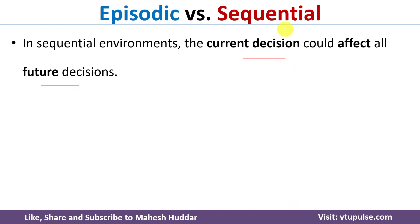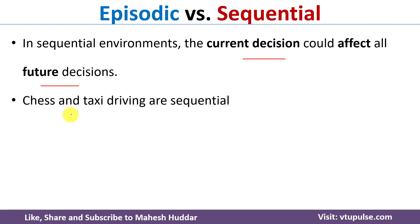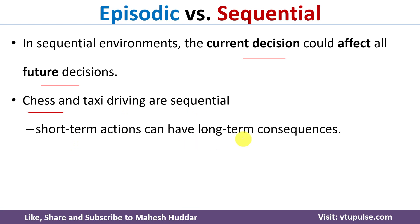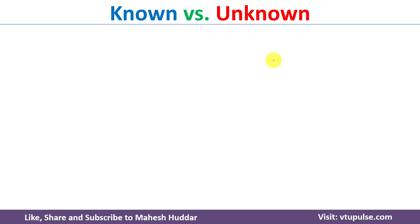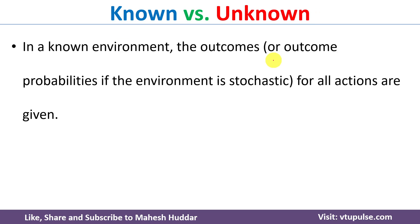In some environments the current decision affects future decisions — these are known as sequential environments. For example, in chess or taxi driving, the current action will affect future decisions, whether in the short term or long term. Such environments are called sequential environments.